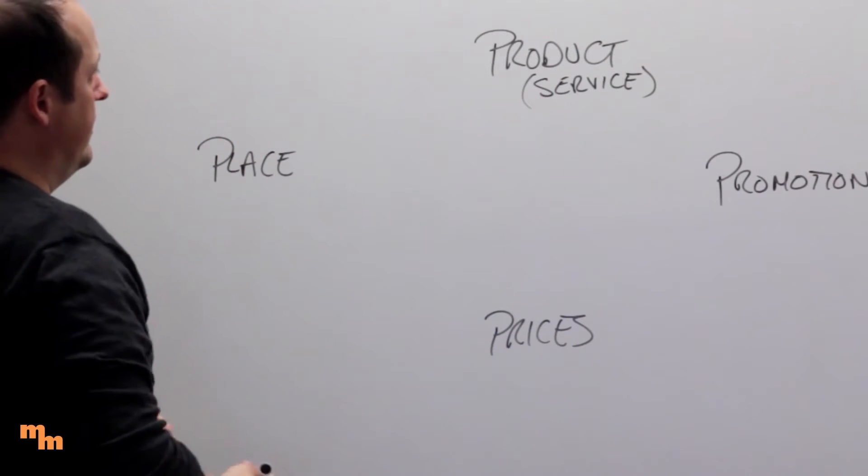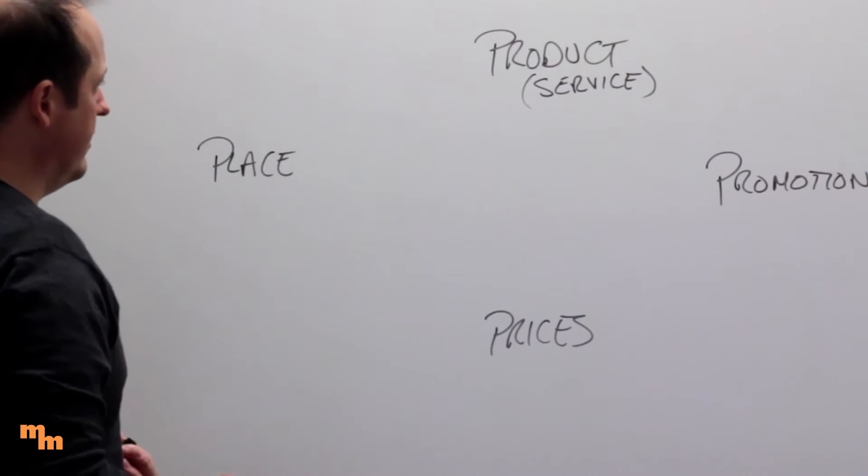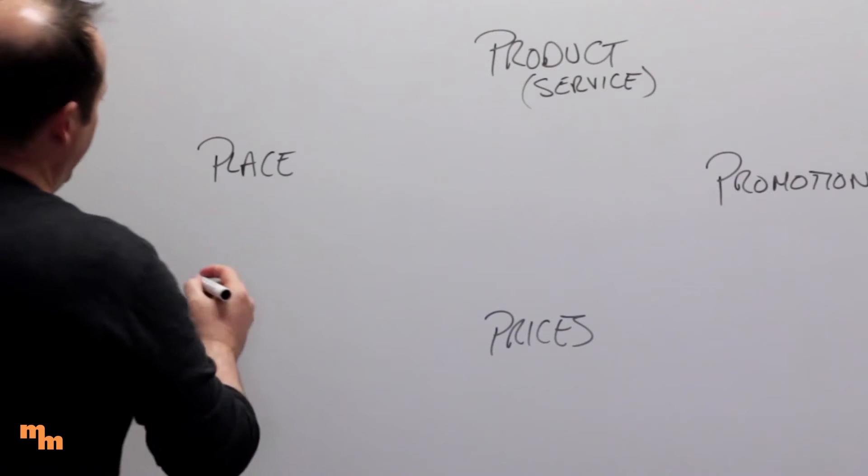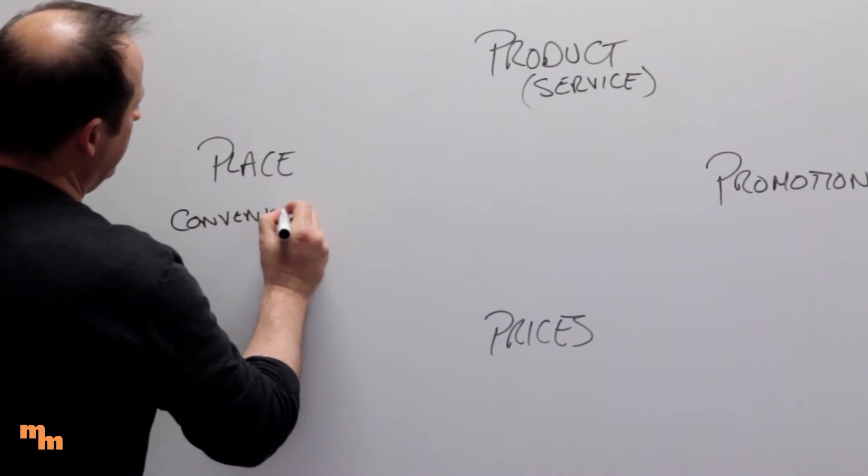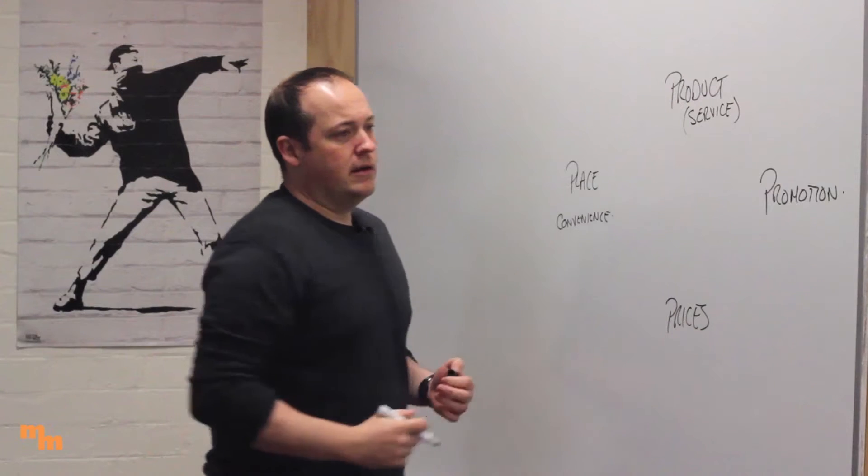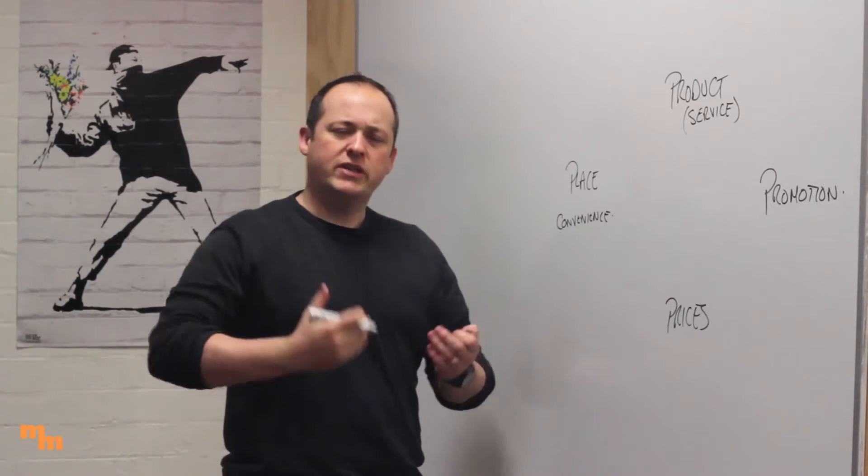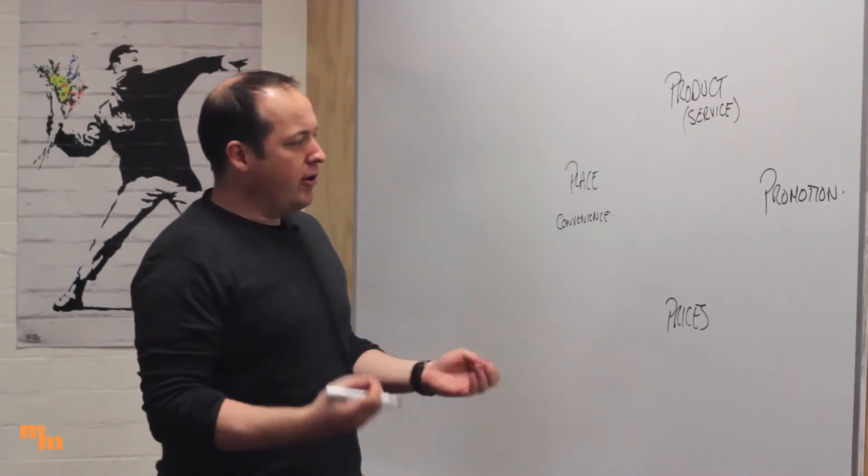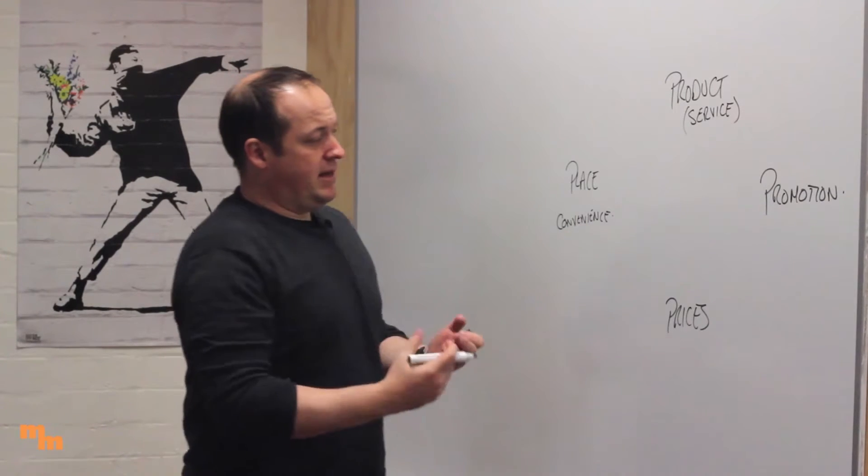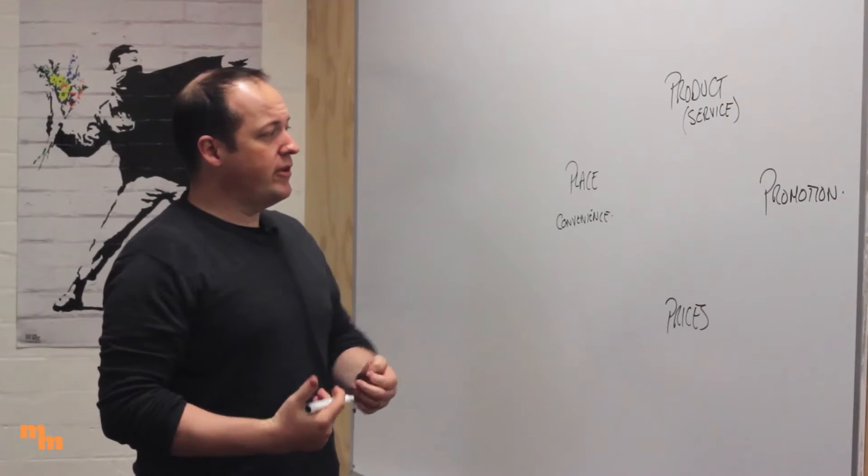When we get into those in a little bit more detail, we start to think about what is the place. When we talk about place, we're talking about convenience. We start to consider how do I actually get a hold of these goods or services? How do I locate your offering? How do I buy it? Where does it come from? That could be anything from online through to your retail offering or any other sort of locality.